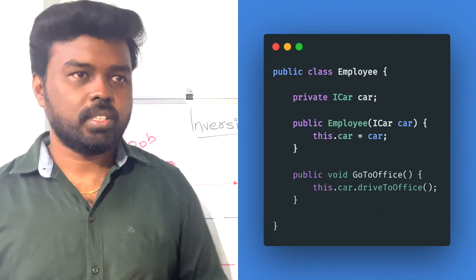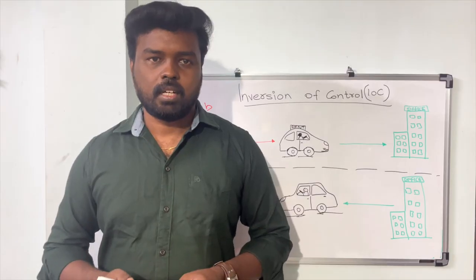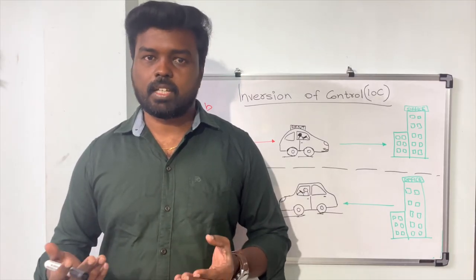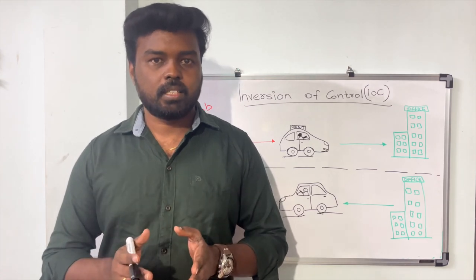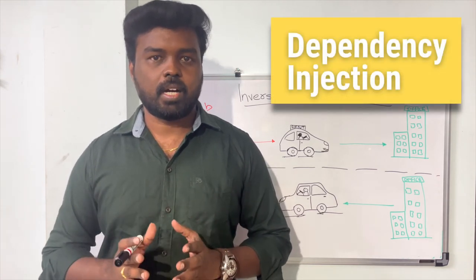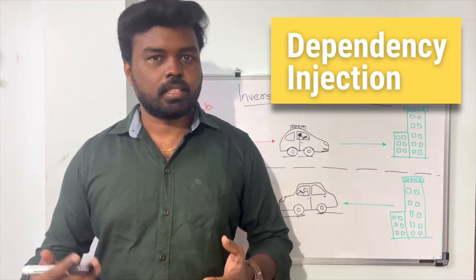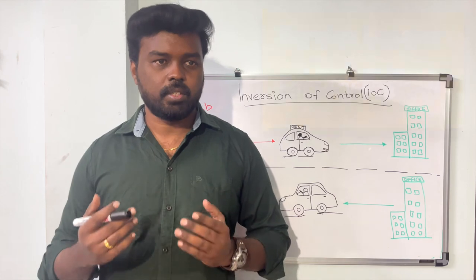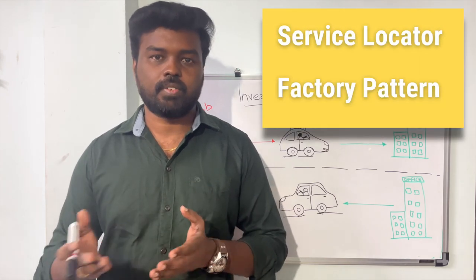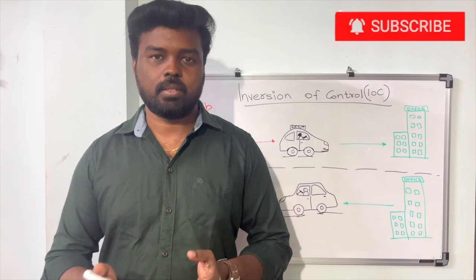Inversion of control is just a principle, and it is up to the developer how to implement it. There are several implementations available. Dependency injection is one, where you pass dependencies through the constructor. You can also use the service locator pattern or the factory design pattern to initialize the dependencies for your objects.